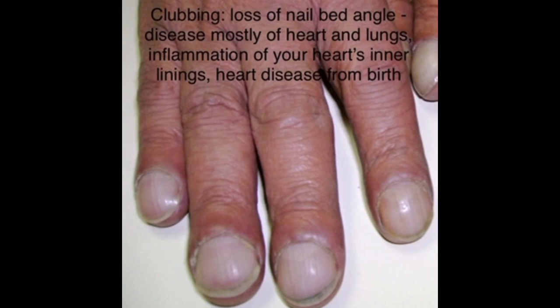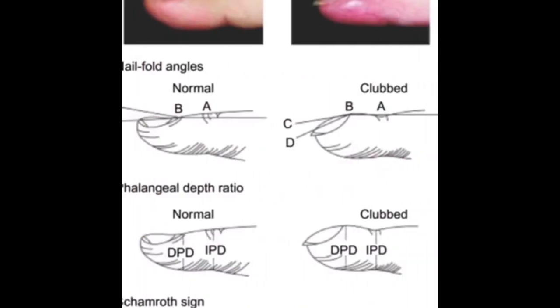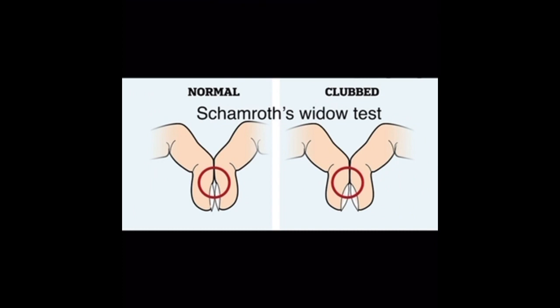This is another condition known as clubbing. In clubbing, there is loss of the nail bed angle, and this happens when there is a disease condition of the heart or the lungs, inflammation of the heart's inner linings, or any kind of heart disease from birth. As you can see, the picture shows the normal fingernail versus the clubbed fingernail. There is a test called Schamroth's window test — you put your fingers together and see whether your fingernails are normal or clubbed.